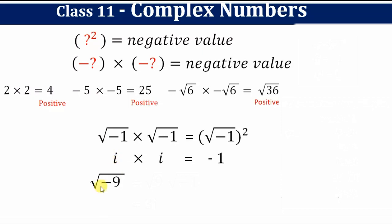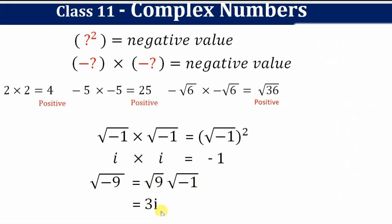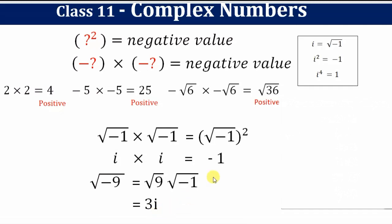Now when you have a negative root, you can split it — for example, √(-9) = √9 × √(-1). √9 is 3 and √(-1) is i, so this gives 3i as the imaginary number. For solving problems, keep these values handy as it will be very convenient.